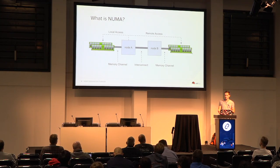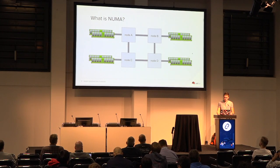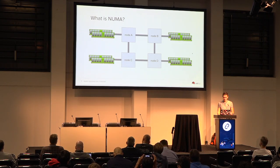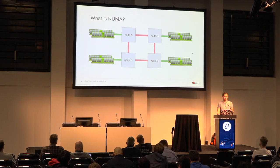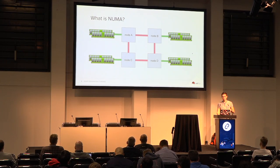If a process wants to access memory associated with another node, you incur a performance penalty. That performance penalty can vary, but 50% can be quite common for something like this vSwitches issue. It's more of a mesh topology now with Intel processors, but jumping between different NUMA nodes can have an increasingly negative effect on your performance. So naturally, what you want to do is make sure that memory accesses, where possible, are local to the node, so you're not having to jump across these links.